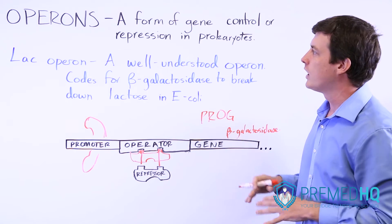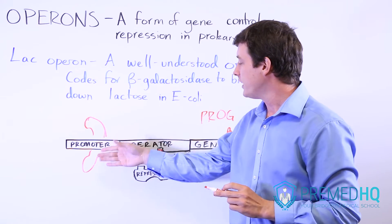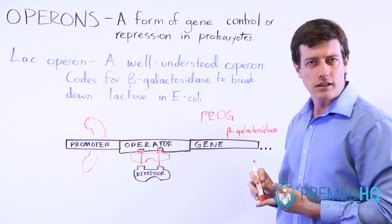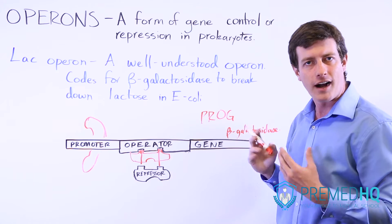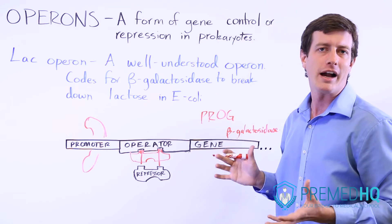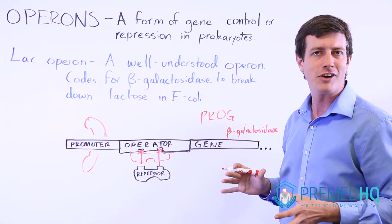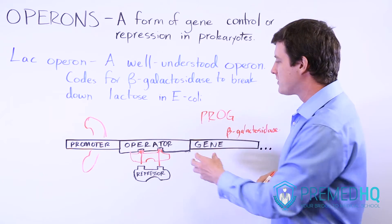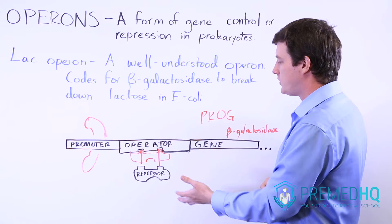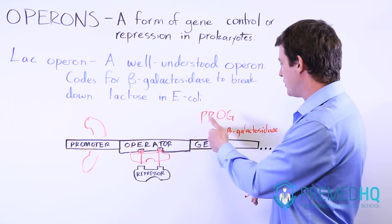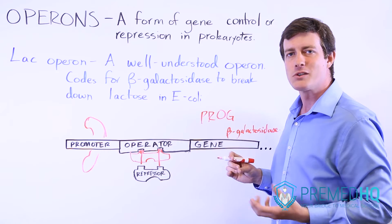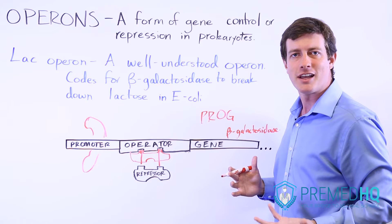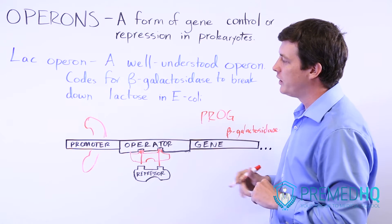However, there are two conditions where the lac operon will be activated. You have to have a low level of glucose and a high level of allolactose, or a lot of lactose in the environment. That makes sense because if you don't have lactose around, there's no need to produce a protein that breaks it down — if there isn't lactose present, you don't need the enzyme.